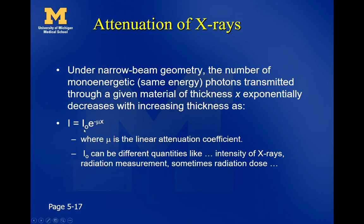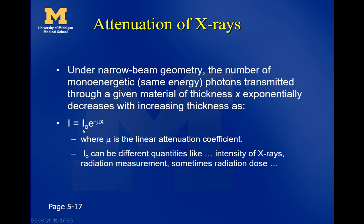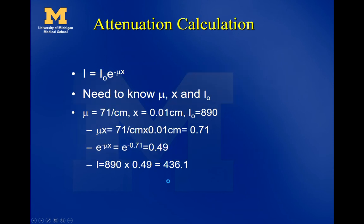The intensity quantity I can represent different things depending on the calculation. It could be the actual number of x-rays — like I equals 100 x-rays — or a radiation measurement at a detector, or something like radiation dose. For example, in total body radiation with lung blocks, we might say we want the attenuator to take the dose down by half. So I and I₀ can be substituted with different quantities to make the equations work as needed.